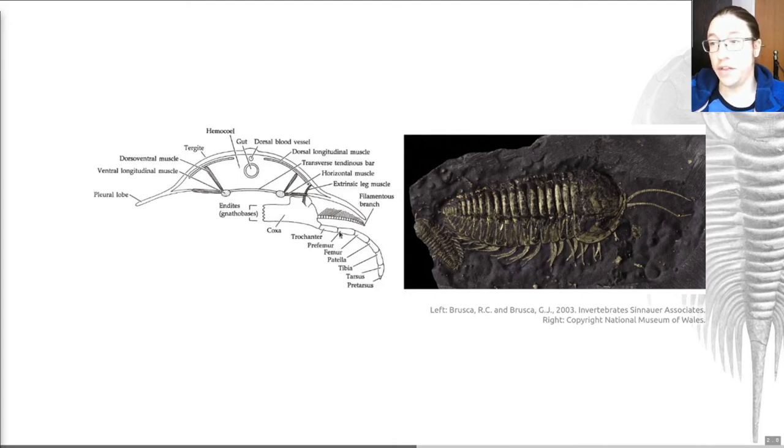So this is basically a gill and this is a locomotory appendage and there's one of those on each side. You can see on the right here a beautiful example of exceptional preservation where the trilobite has been replaced with pyrite so we've got a very clear picture of what the limbs actually look like. But that's very rare.